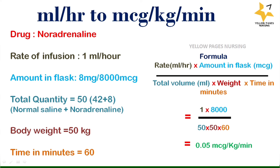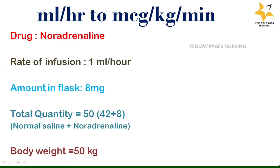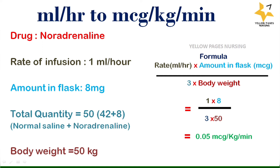For the first example, there is a simplified method derived from the same formula, where all values remain the same. The simplified formula is: rate multiplied by amount in flask, divided by 3, multiplied by body weight. The value 3 comes from the denominator: when converting to micrograms there is a 1,000, and body weight (50) multiplied by time (60) gives 3,000 — the thousands cancel out, giving the same answer of 0.05 micrograms per kg per minute.